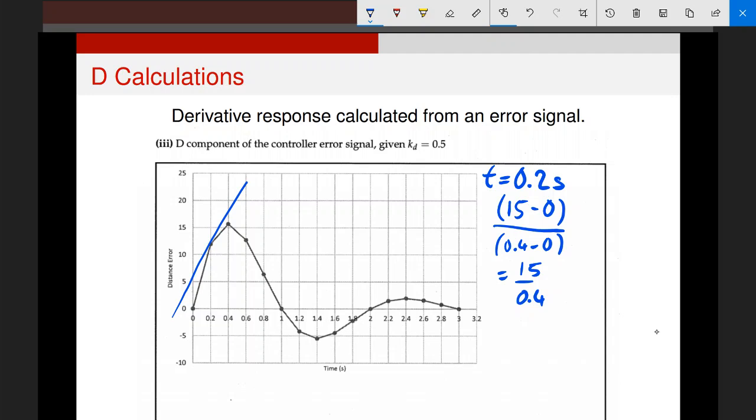So, to calculate what my derivative component will be, it will be 15 divided by 0.4 times 0.5. Why times 0.5? Well, because my Kd value up here is 0.5. And I can go ahead and do that for every other point along that line. All I do is, I look at the points on either side of it, calculate the slope based on those two points, not the actual point itself, but the two points on either side, and then multiply that by my Kd, and that will be my derivative response components.